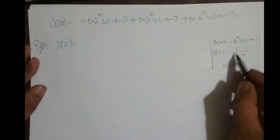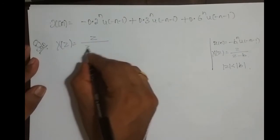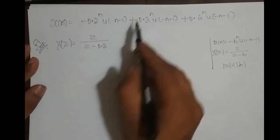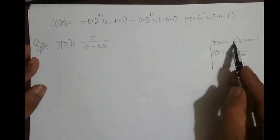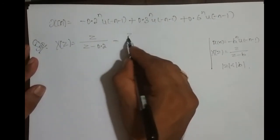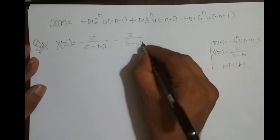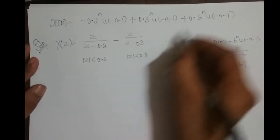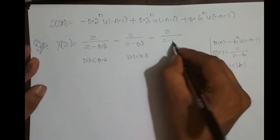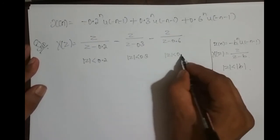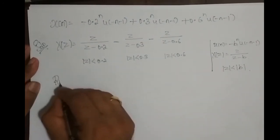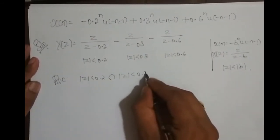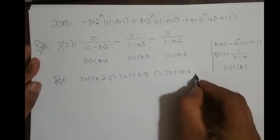So for the first term, the Z-transform is z/(z−0.2) with ROC |z| < 0.2. For the second term, it is −z/(z−0.3) with ROC |z| < 0.3. For the third term, it is −z/(z−0.6) with ROC |z| < 0.6. The combined ROC is the intersection: |z| < 0.2 intersected with |z| < 0.3 intersected with |z| < 0.6.